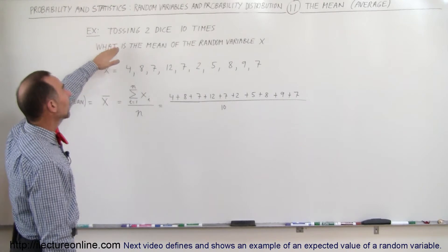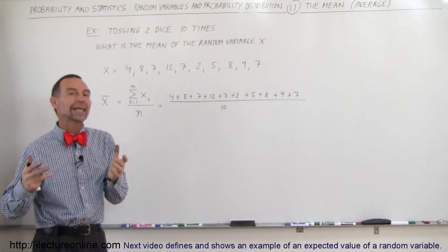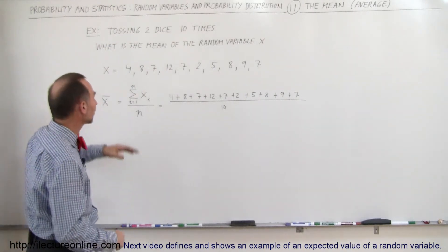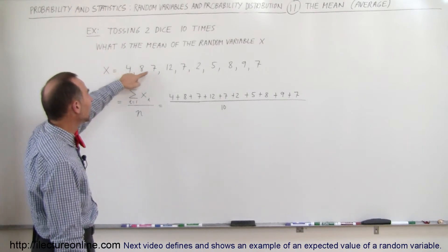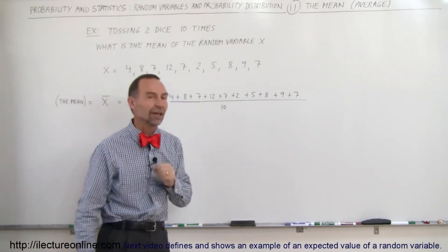So let's say we toss two dice ten times. We're going to get ten values for those ten tosses and let's say that the values are 4, 8, 7, 12, 7, 2, 5, 8, 9, and 7.